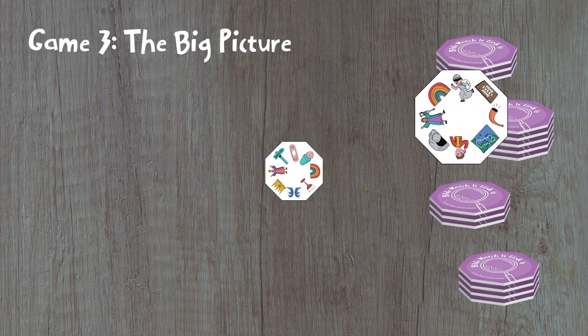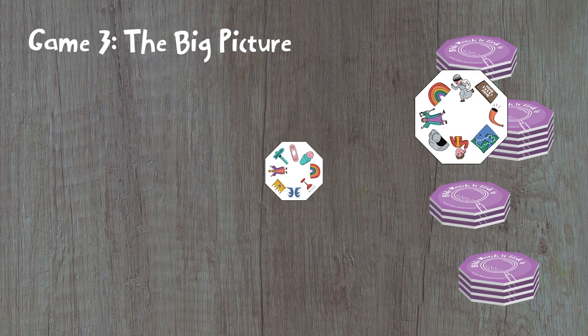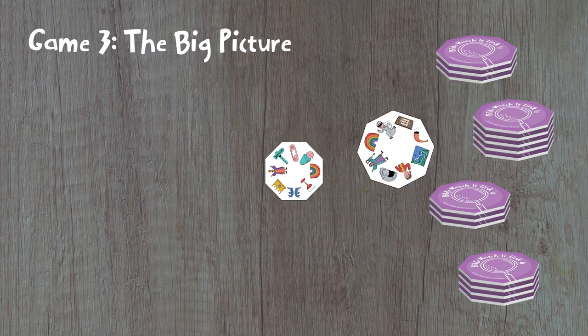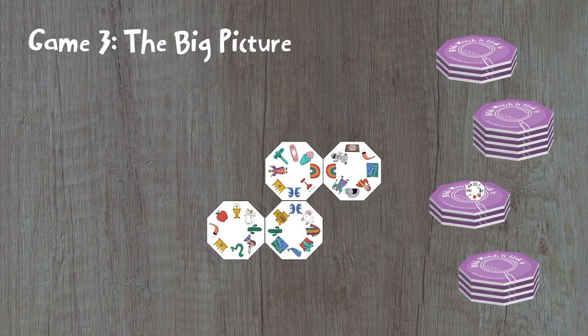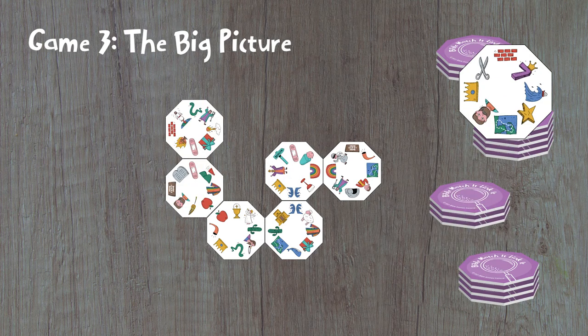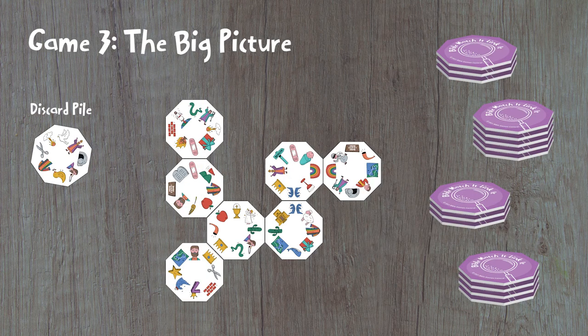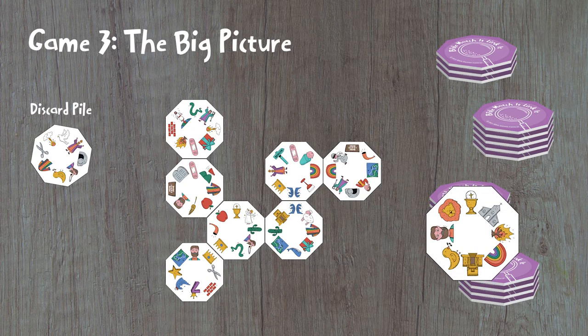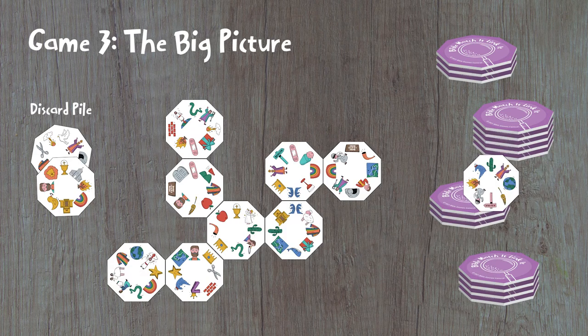Players take turns to flip over the top tile from any stack, then work together to link the new tile to existing face up tiles. If the new tile cannot be linked, place it in a common discard pile. Play continues with the next player flipping over another tile.